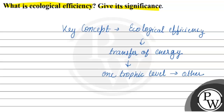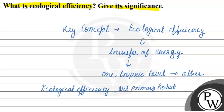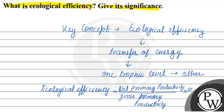If we look at the formula, ecological efficiency is equal to net primary productivity upon gross primary productivity, multiplied by 100.